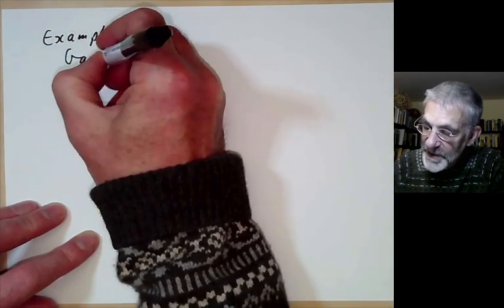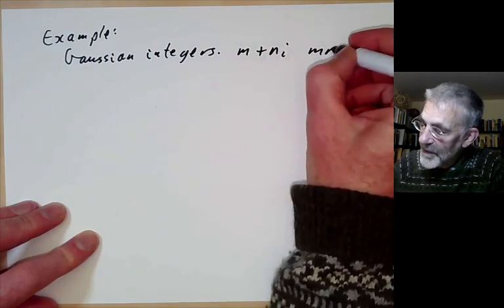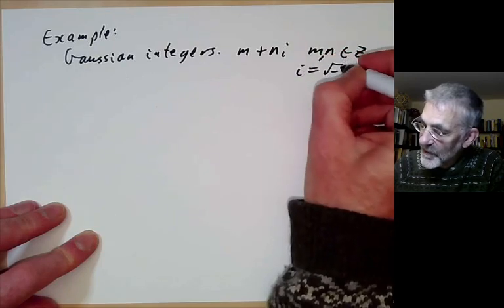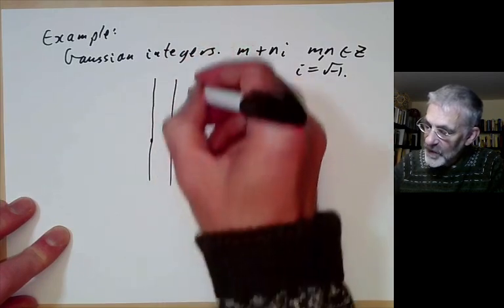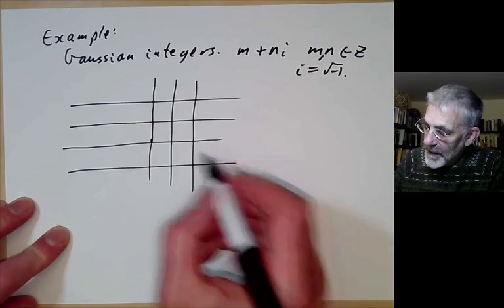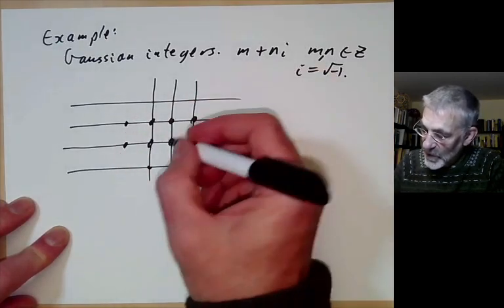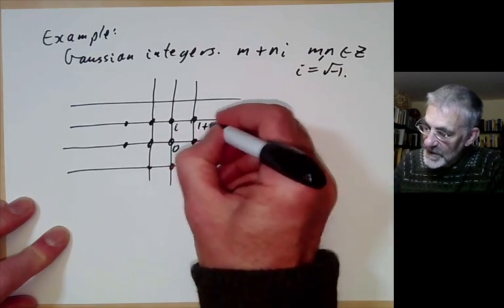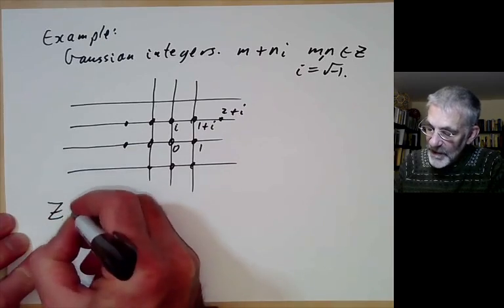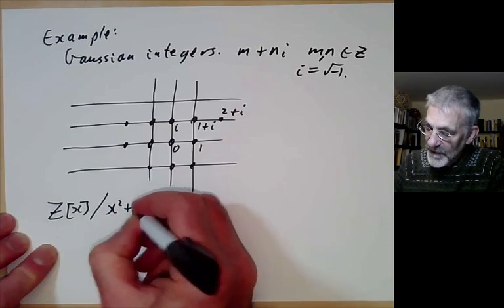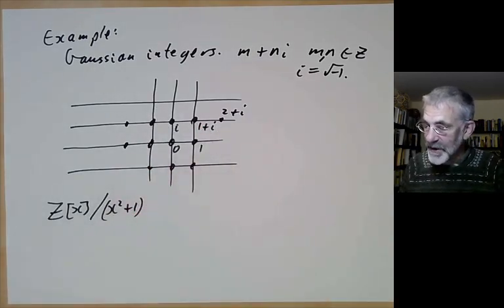Another more interesting example of a Euclidean ring is the Gaussian integers: all integers of the form m + ni for m, n integers and i = √(−1). This is a subring of the complex numbers. We can draw the Gaussian integers as a rectangular grid in the complex plane, with points 0, 1, i, 1+i, 2+i, and so on. The Gaussian integers can also be obtained by taking Z[x] and quotienting by (x² + 1), so they are an example of a quotient of rings.